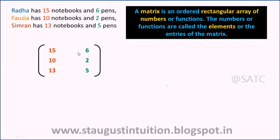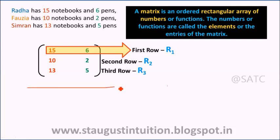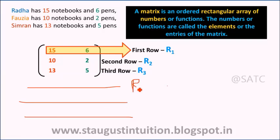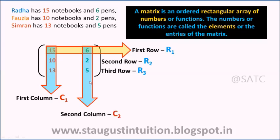This is the first row. Then the second row. Then the third row. We write the rows as R1, R2, R3. Let's see the columns. This is the first column, C1. Second column, C2.